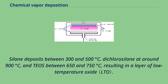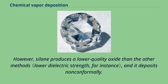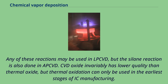However, silane produces a lower quality oxide than the other methods, and it deposits non-conformally. Any of these reactions may be used in LP-CVD, but the silane reaction is also done in APCVD. CVD oxide invariably has lower quality than thermal oxide, but thermal oxidation can only be used in the earliest stages of IC manufacturing. Oxide may also be grown with impurities.